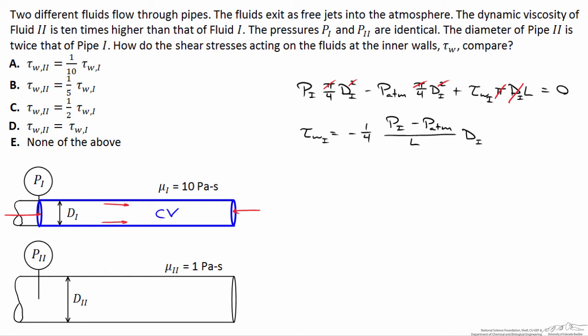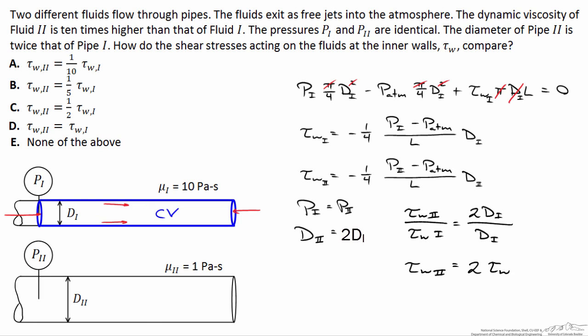If I rearrange the force balance and solve for the shear stress at the wall for pipe one, I first find that the shear stress is acting in the negative direction, or in the direction opposite to the fluid flow. I also find that it scales linearly with the diameter of the pipe, and if I do a similar force balance for case two, I come up with this second expression. If I note that P1 is equal to P2, and that the diameter of pipe two is twice as big as the diameter of pipe one, we can come up with the following expression. The ratio between the shear stress in case two and in case one is equal to 2D1 divided by D1, or I can conclude that the shear stress at the wall in case two is actually twice the shear stress at the wall in case one.